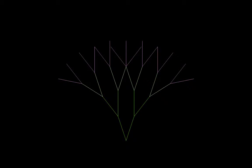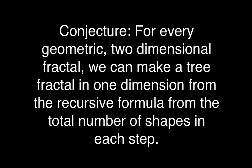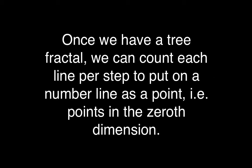From this, we formed a conjecture. For every geometric, two-dimensional fractal, we can make a tree fractal in one dimension from the recursive formula from the total number of shapes in each step. Once we have a tree fractal, we can count each line per step to put on a number line as a point, i.e., point in the zeroth dimension.